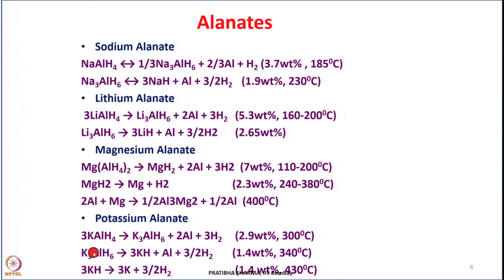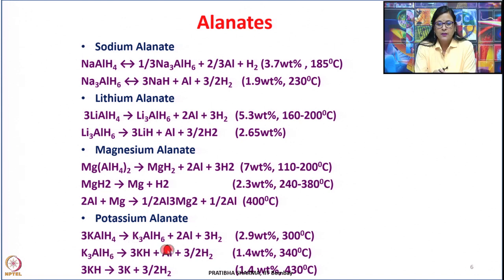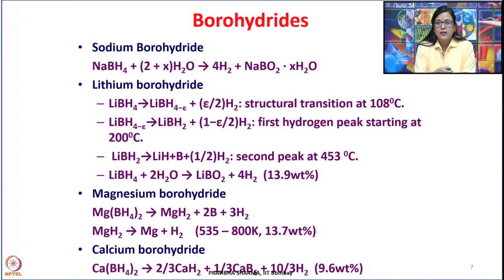This magnesium hydride can further give hydrogen at 240 to 380 degrees centigrade, yielding 2.3 weight percent. Similarly, potassium alanate KAlH4 can give hydrogen forming K3AlH6, releasing 2.9 weight percent at 300 degrees centigrade, and a further step gives 1.4 weight percent at 340 degrees centigrade. These complex hydrides release hydrogen in several steps and the desorption temperatures are usually higher.